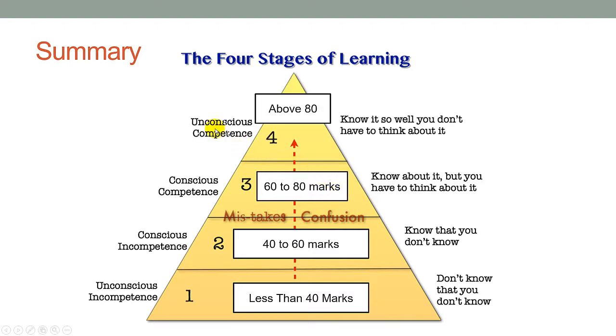Then from there, your child will be able to get into unconscious competence. This is where your child knows so well that he doesn't even have to think about it. He just looks at the question and he will know exactly which concept and which method to apply. So if your child is in this region which is above 80 marks, keep it up. Just focus on solving those challenging problem sums and your child should be able to score A star for his PSLE.